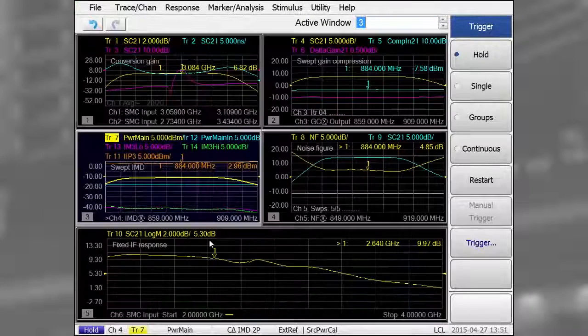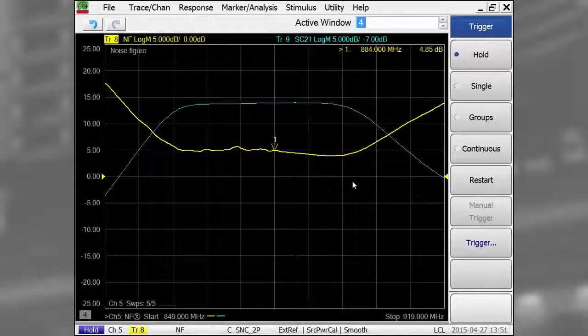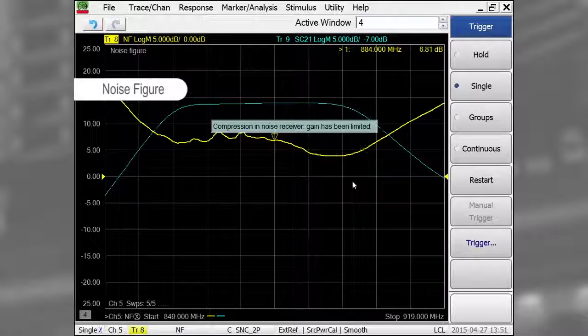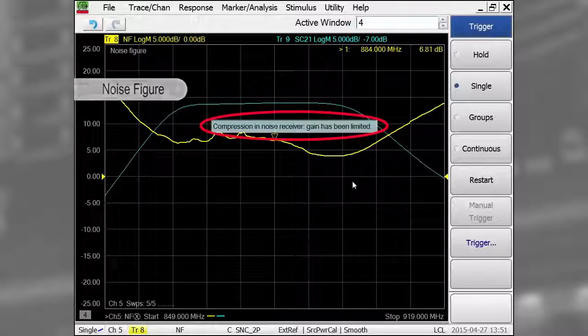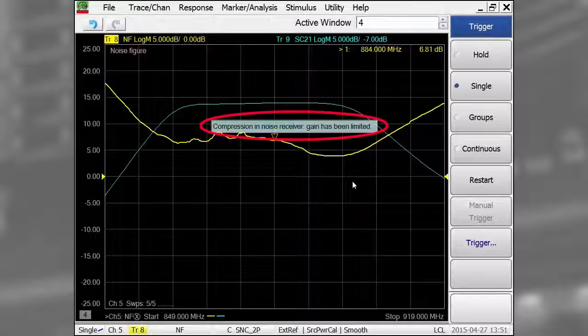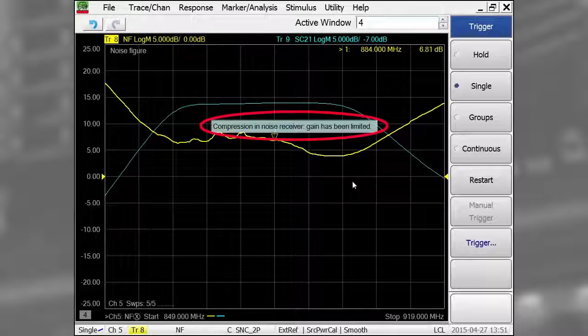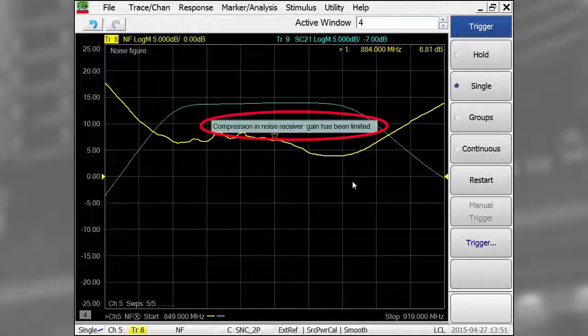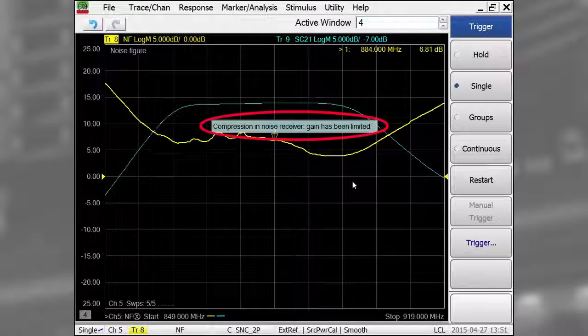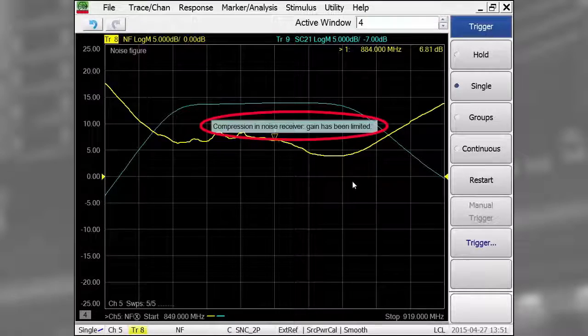So far, so good. However, in my noise figure measurement, I'm getting an error message indicating compression in the noise receiver. This indicates that there is either too much noise power or a spurious signal that is overloading the noise receiver, which can cause bad measurements.